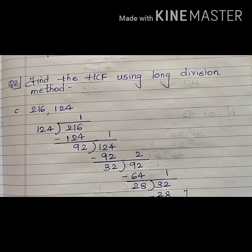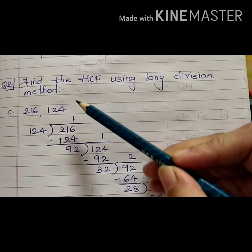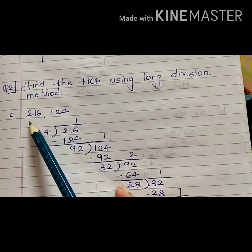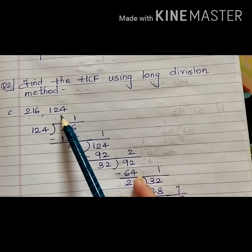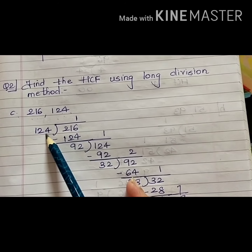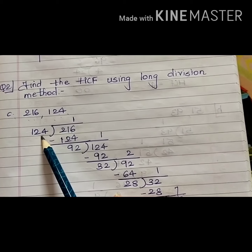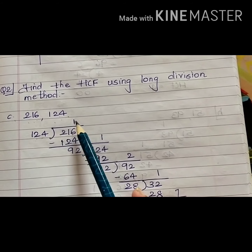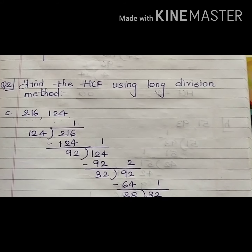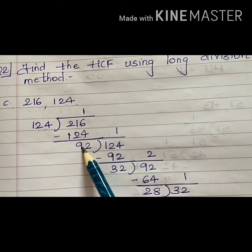Now I will explain the same division method from practice time, question number 2 — find the HCF using long division method. I will be explaining C1: the numbers are 216 and 124. The smaller number, 124, will be the divisor and the bigger number, 216, will be the dividend. Start the division — 124 ones are 124. I get 92 as the remainder.